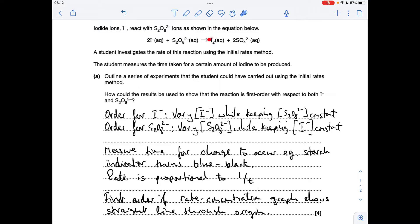So this reaction produces iodine. What you could do is measure the time for a change to occur. For example, if you had some starch indicator in this, as soon as enough iodine's been produced, the starch indicator would turn that blue-black colour. From that time, you could then say the rate is proportional to 1 over the time.